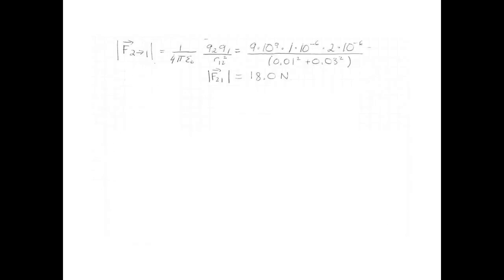So the magnitude of the force that 2 exerts on 1 is 1 over 4 pi epsilon 0 q2 q1 over r12 squared. That's 9 times 10 to the 9 multiplied by 1 microcoulomb multiplied by 2 microcoulombs and divided by 0.01 squared plus 0.03 squared. And that is a force of 18 newtons.